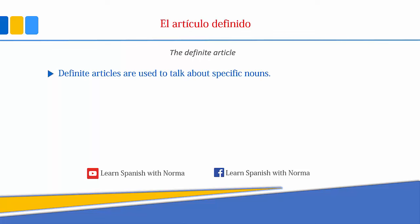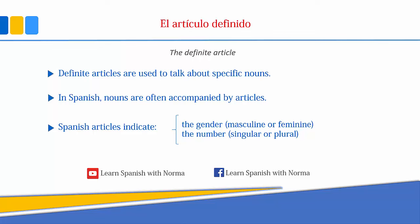In Spanish, there are two types of articles: the definite article and the indefinite article. In this lesson, we will focus on the definite article. Definite articles are used to talk about specific nouns. In Spanish, nouns are often accompanied by articles. Spanish articles indicate the word's gender — masculine or feminine — and the word's number — singular or plural.